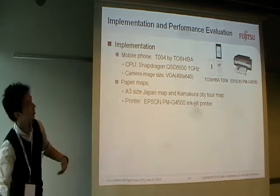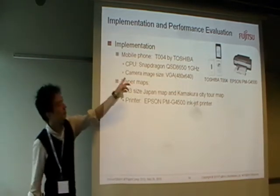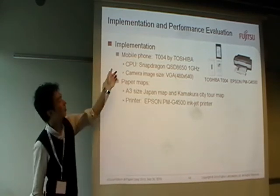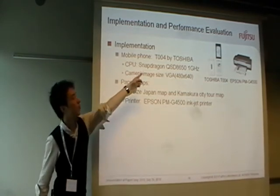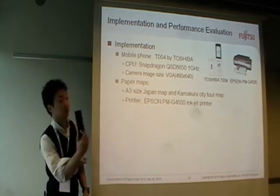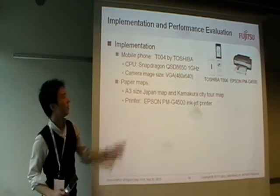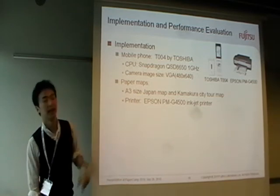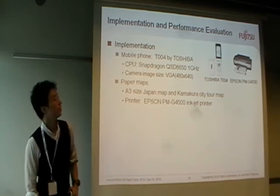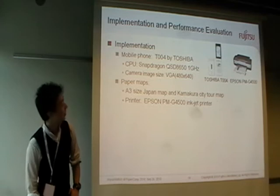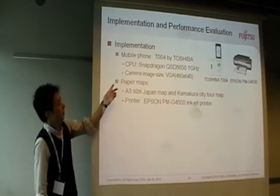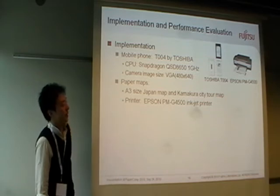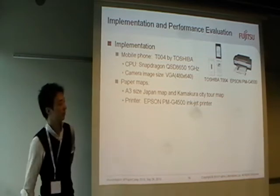For implementation, we use a mobile phone — a T-01 phone by Toshiba — with a Snapdragon 1 GHz CPU and VGA camera image size. As for paper maps, we use an A3-size Japan map and a Kamakura city map. An Epson PM-G4 printer is used for printing.